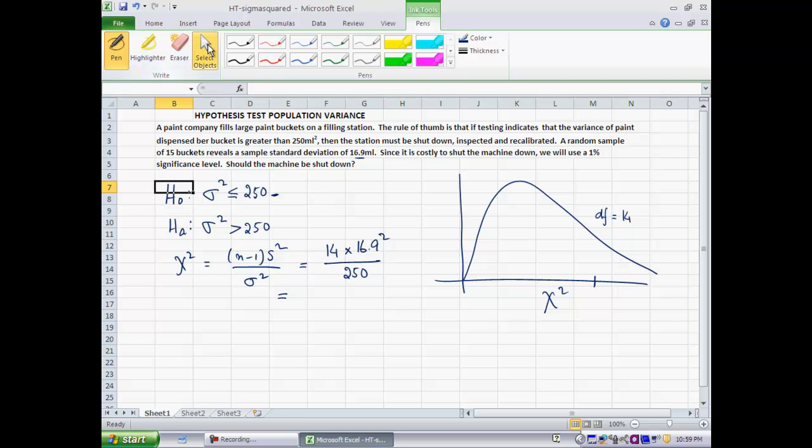Because notice that the standard deviation sample standard deviation is 16.9 milliliters. So the sample variance would be 16.9 squared milliliters squared. Now the denominator would be 250 because that is what σ² would be if the null were true as an equality. So let's do the computation. This is equal to 14 times 16.9 times 16.9 divided by 250. That ends up being 15.9, let's say 16.